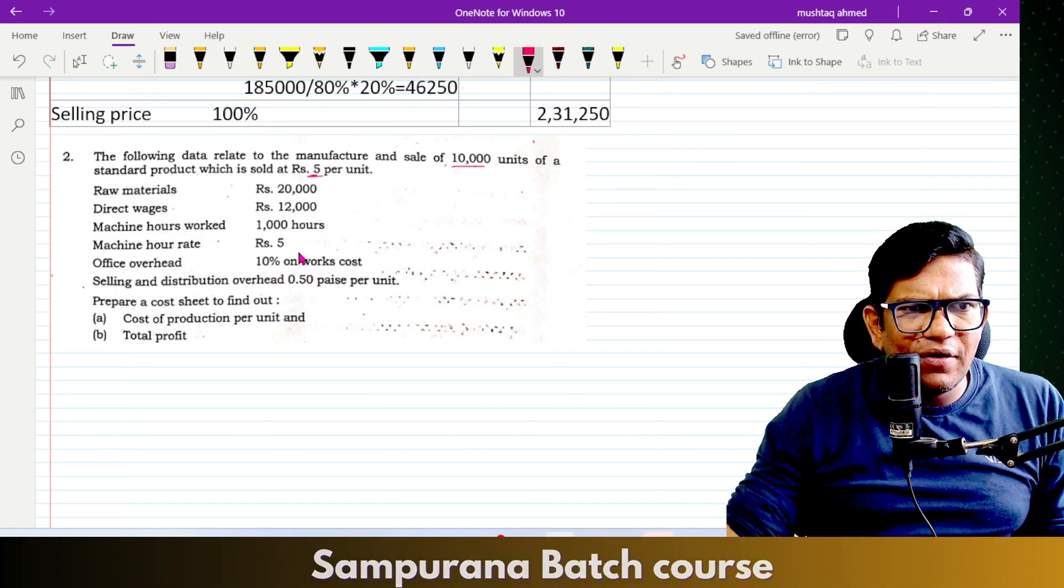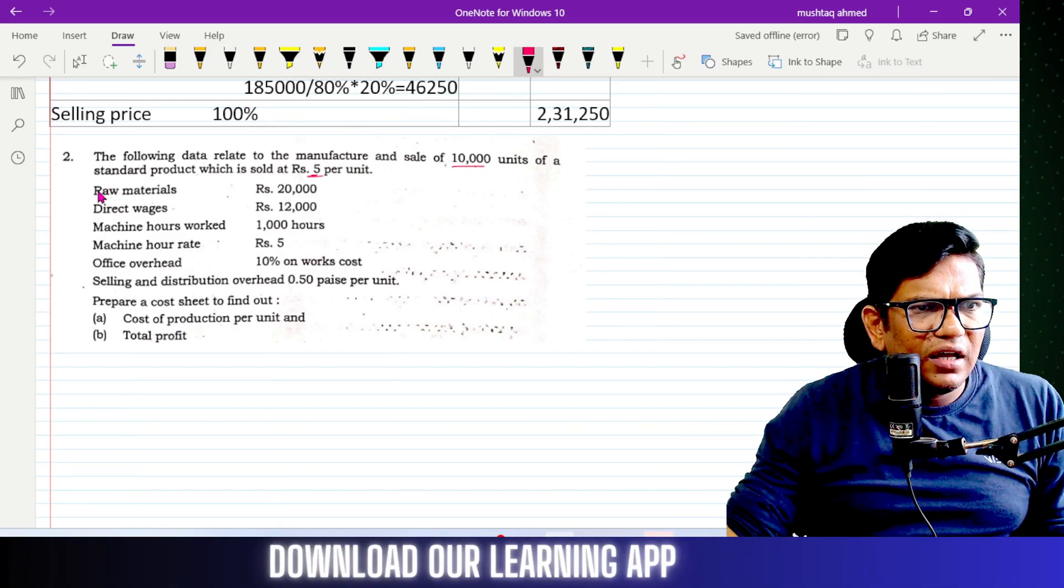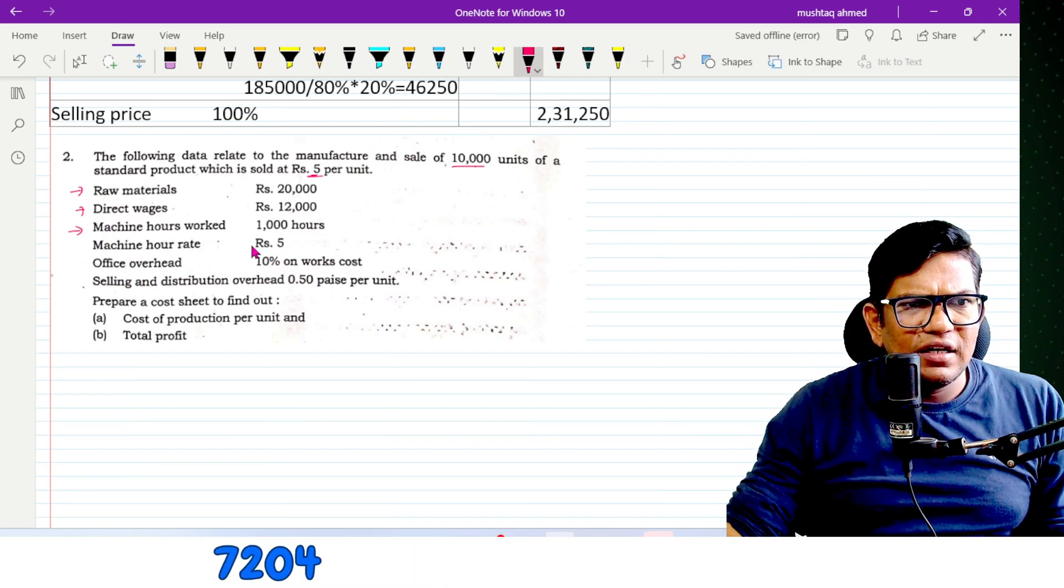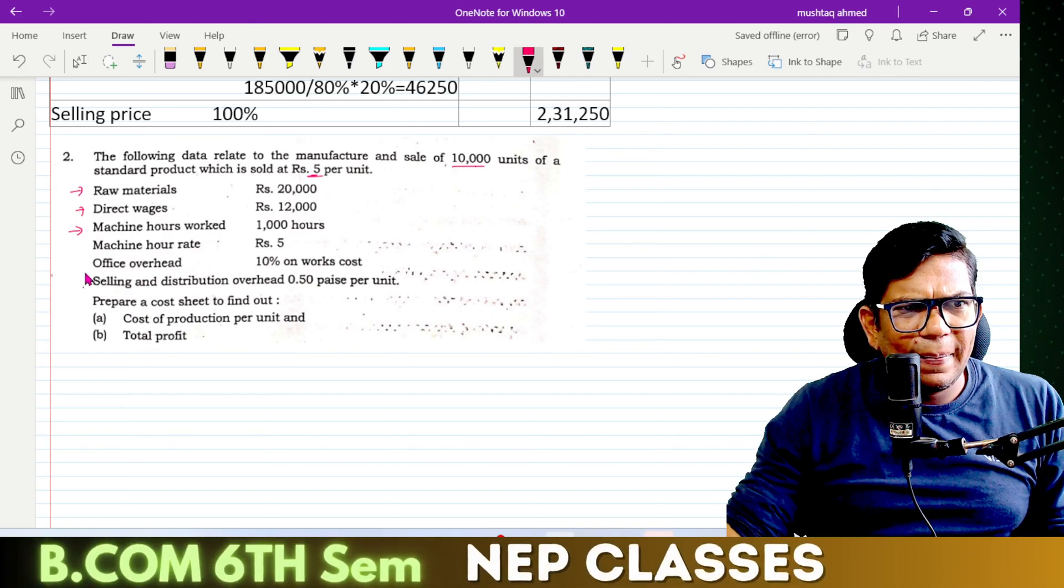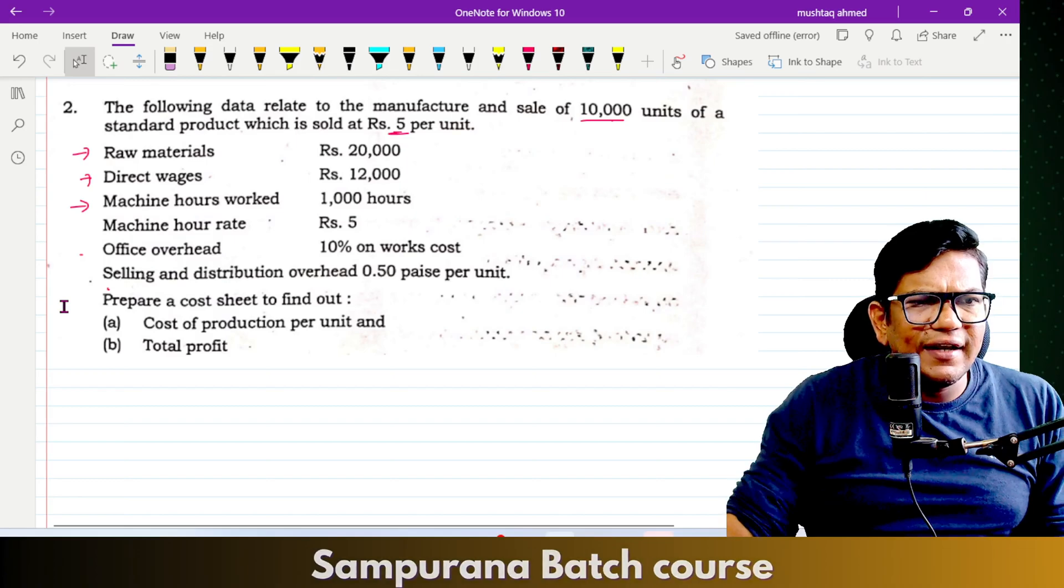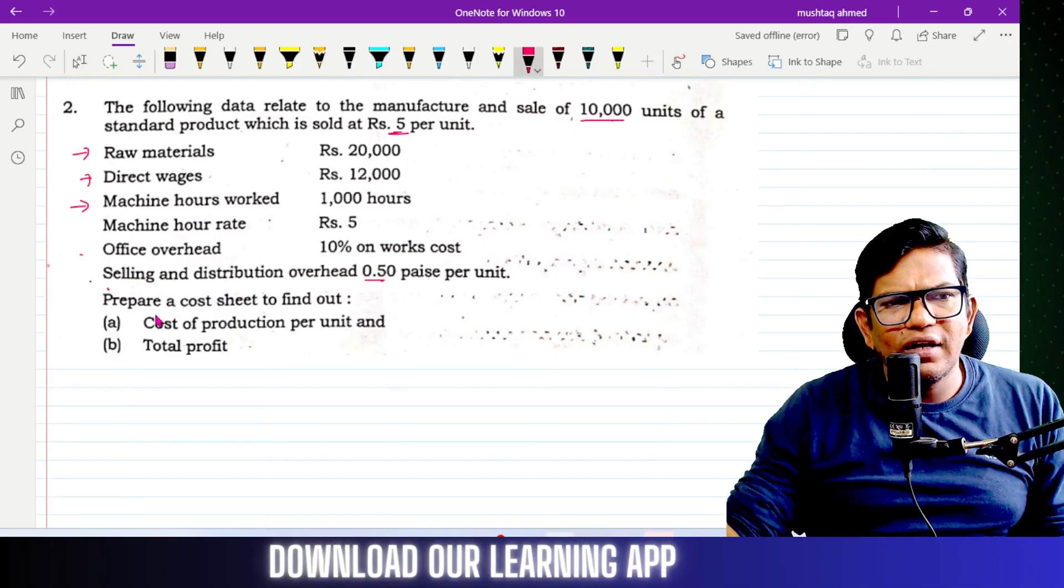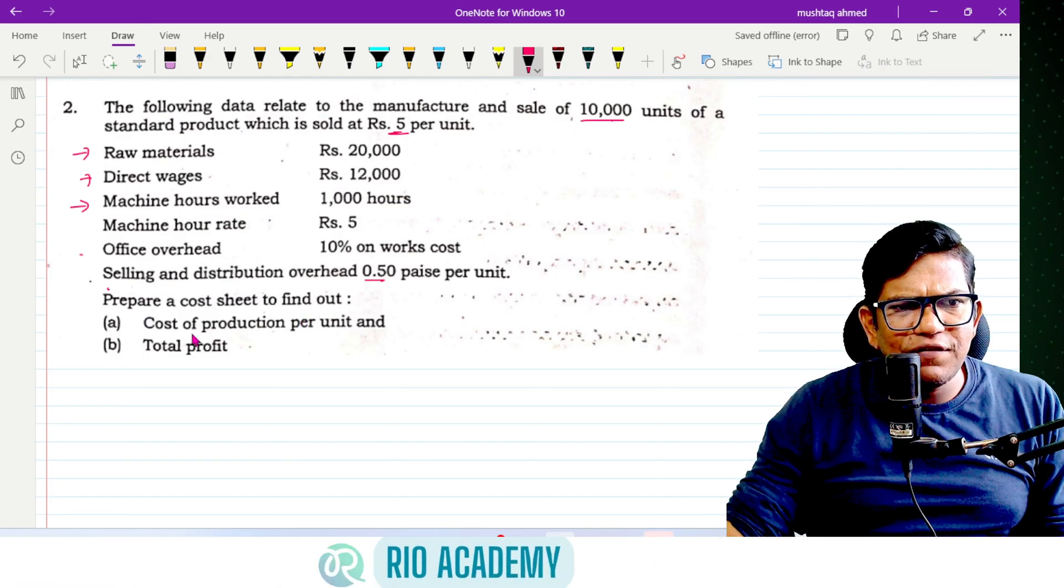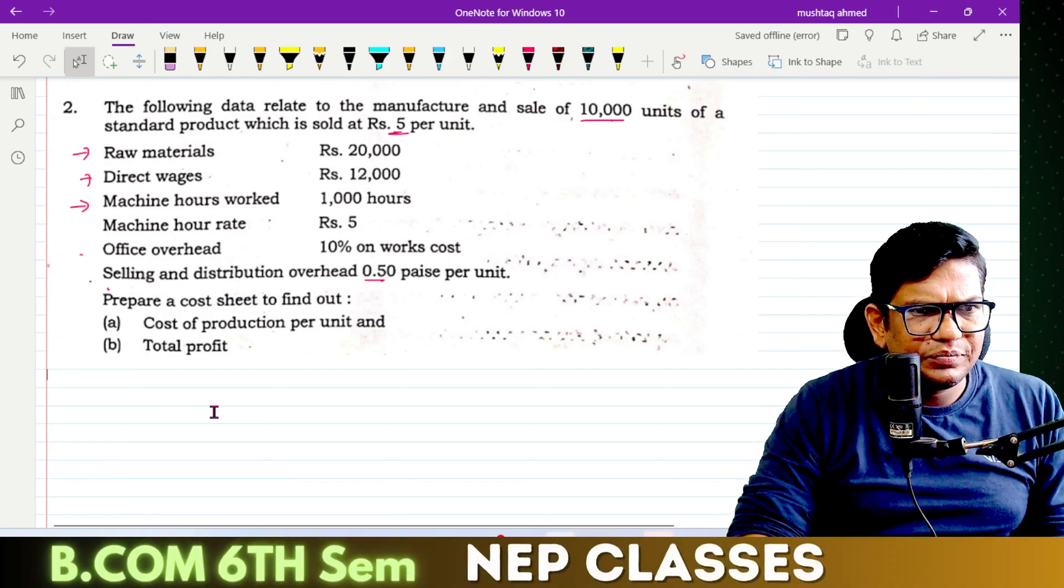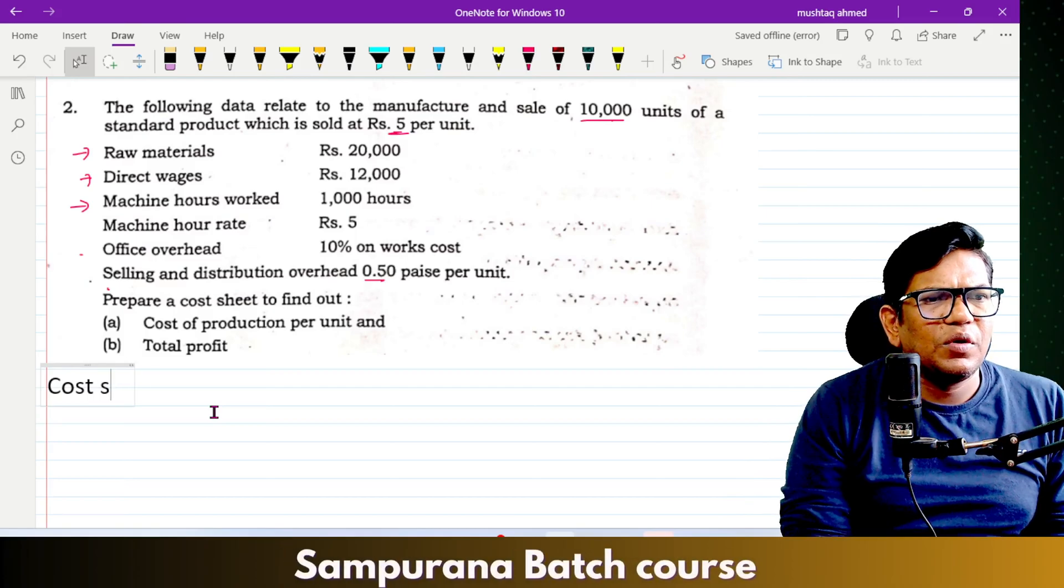which are sold at Rs. 5 per unit. We have raw material, direct wages, machine hours, work cost, selling and distribution at 0.5 per unit. Now prepare a cost sheet.